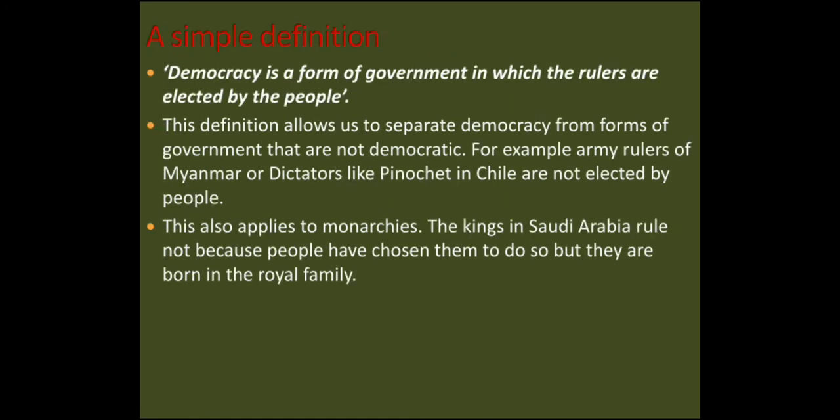So now let us start with a simple definition: Democracy is a form of government in which rulers are elected by the people. Democracy hukumat ki wo tarz hai jis mein hukumran ko log muntakhib karte hain. This definition allows us to separate democracy from forms of government that are non-democratic — yeh alag karta hai ki kaun si hukumat democratic hai aur kaun si non-democratic.